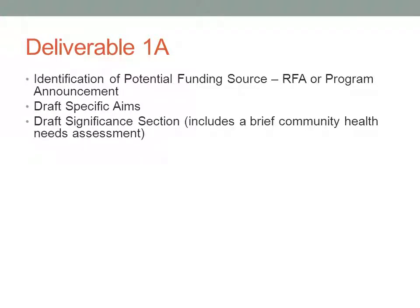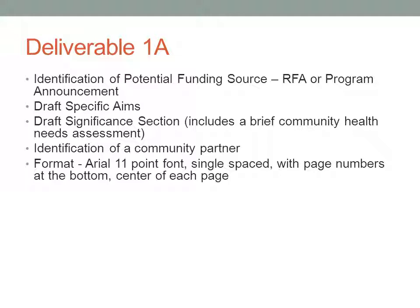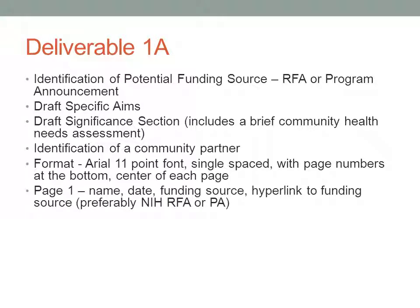For Deliverable A, we've listed the various components in the syllabus and also in the assignment section of the course. I suggest that all of you use the hyperlink we've provided to look at some suggestions on how to best write specific aims and the significance section. One thing we are really stressing for the significance section is that you include a community health needs assessment. Regardless of who your community is, you need to really work on figuring out what their needs are and how those relate to the research project you're developing. Pay attention to what their needs truly are, because perhaps your research project needs modifying or you need to come up with a different idea based on the existing needs of the community you're addressing.